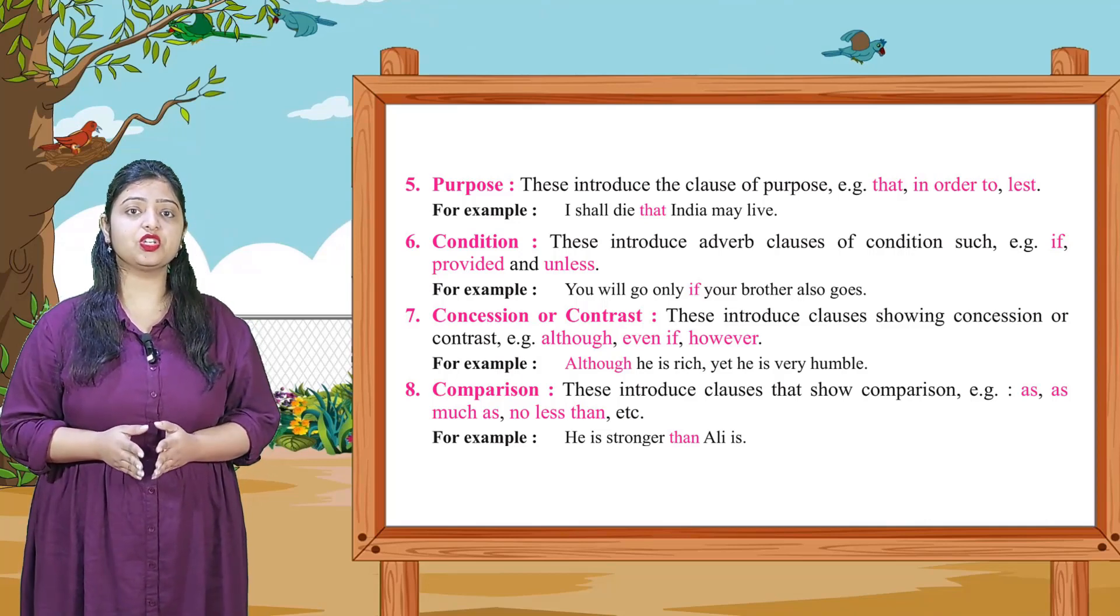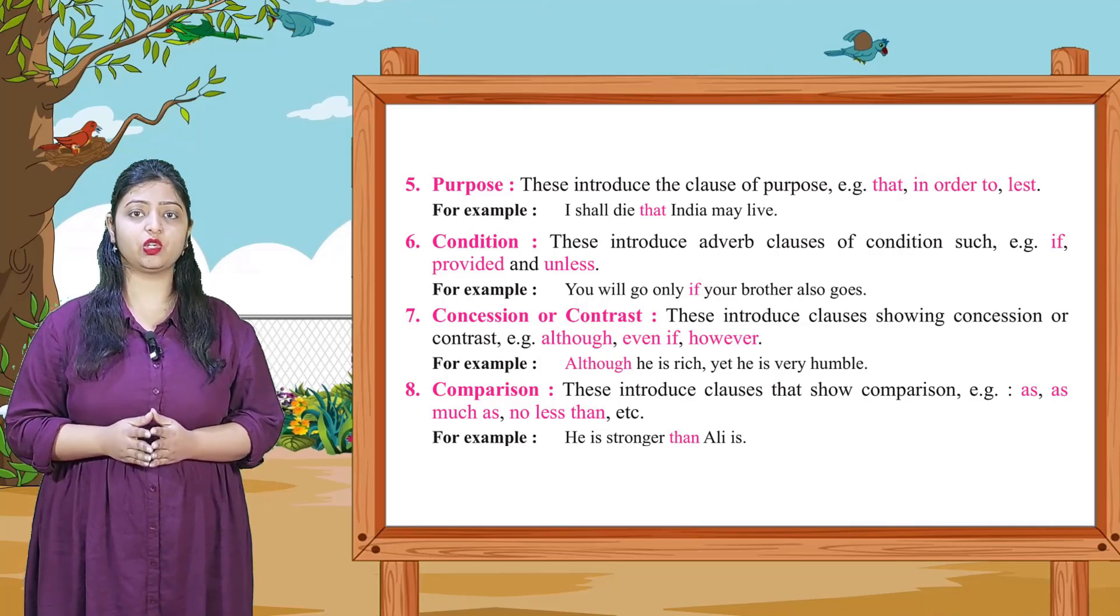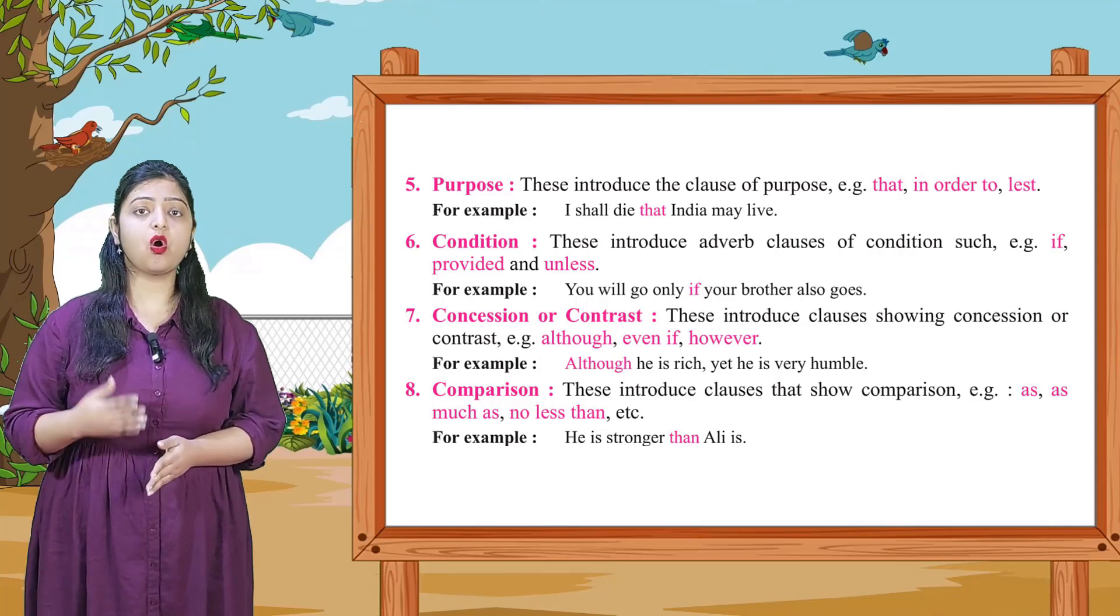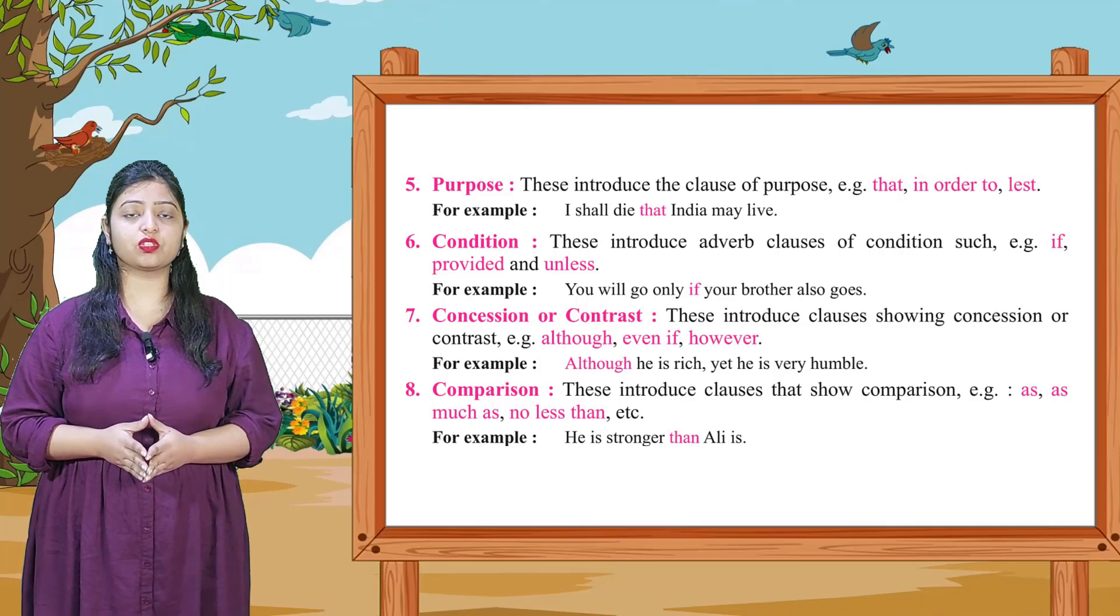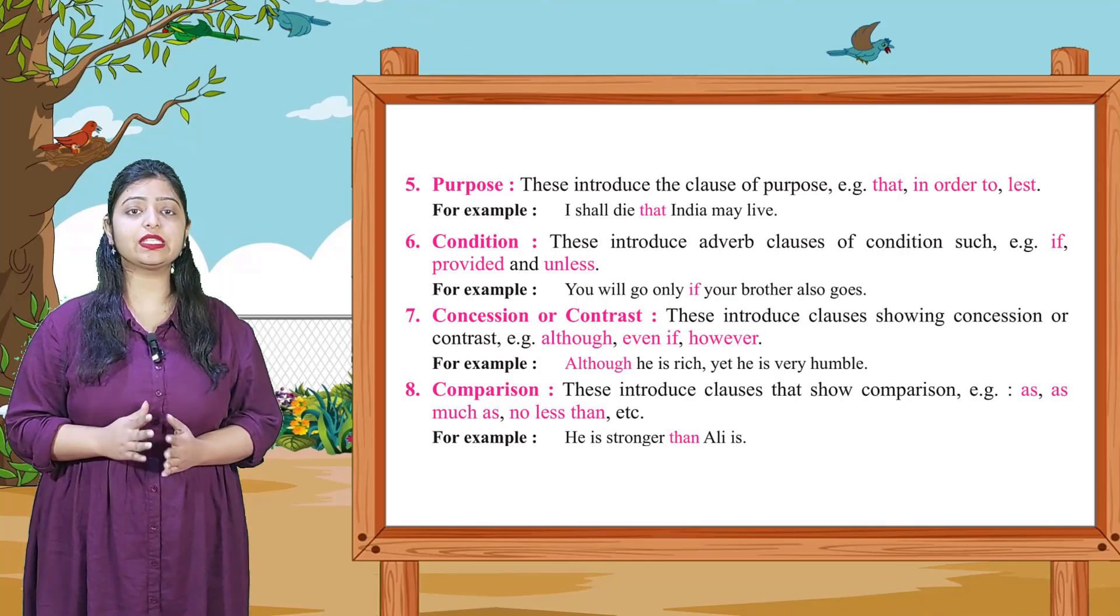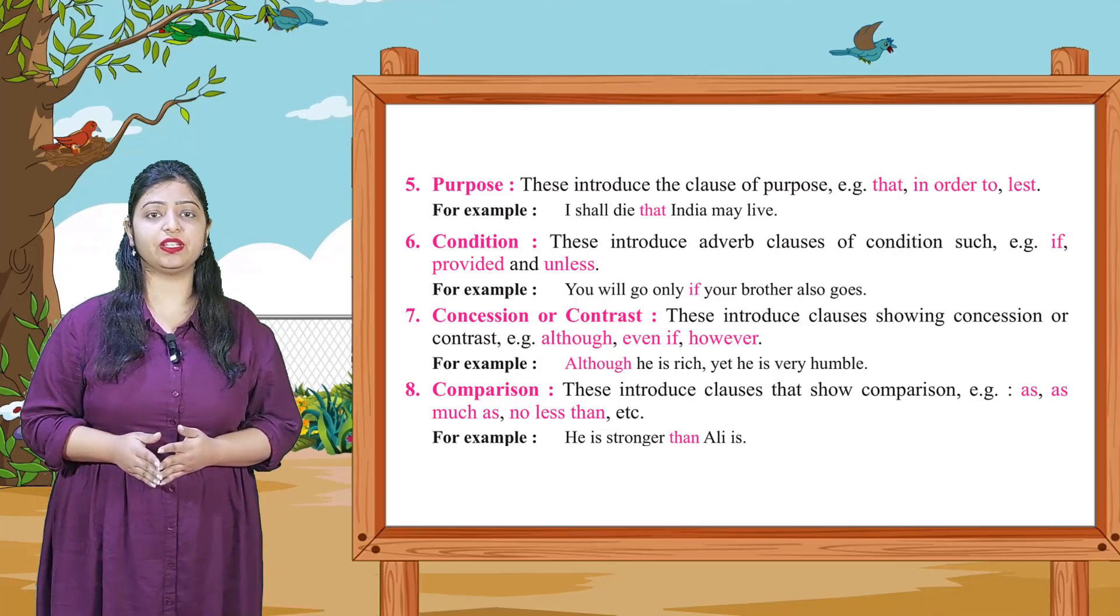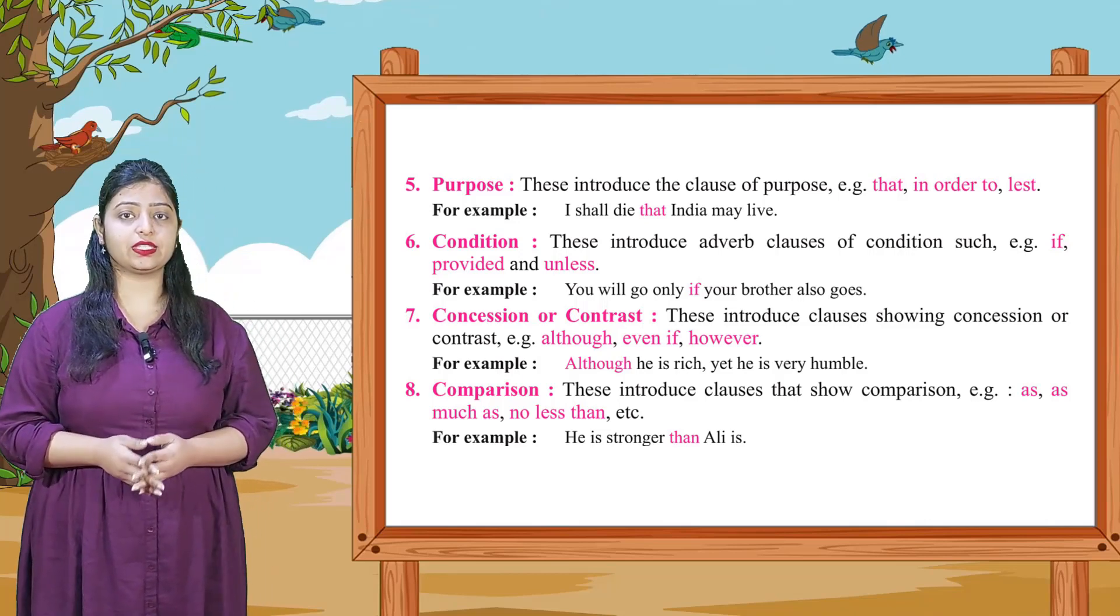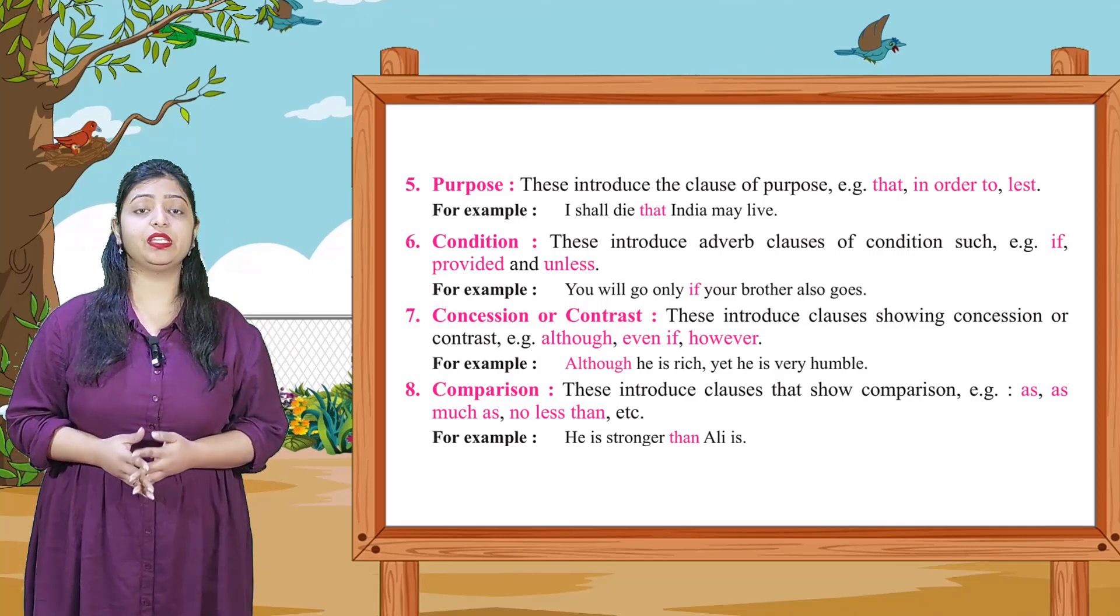Seventh, concession or contrast. These introduce clauses showing concession or contrast. Examples: although, even if, however. In these types of clauses we see some kind of concession or contrast, like although, even if, however. Example: Although he is rich, yet he is very humble.